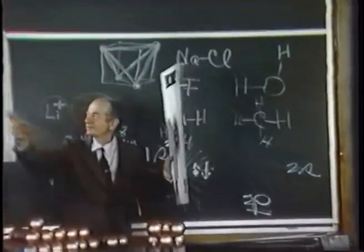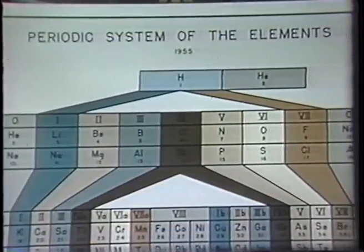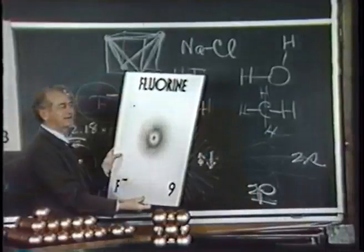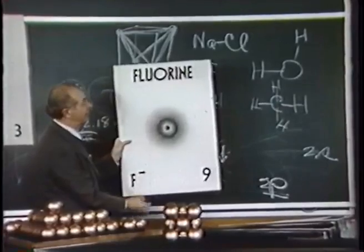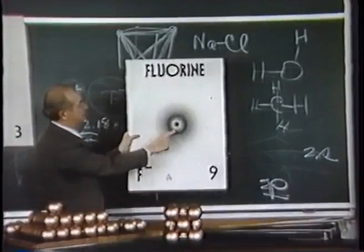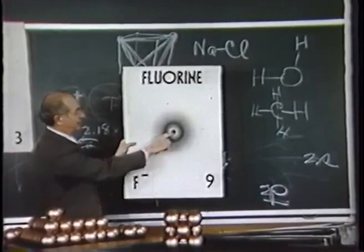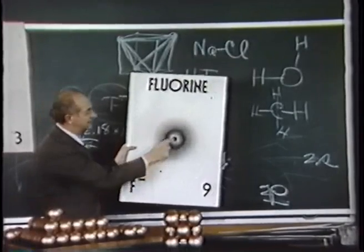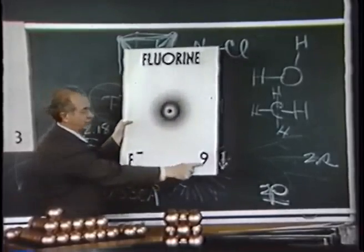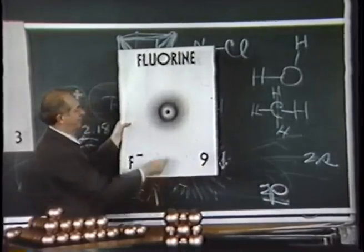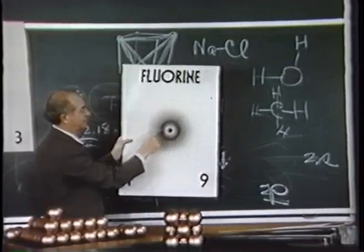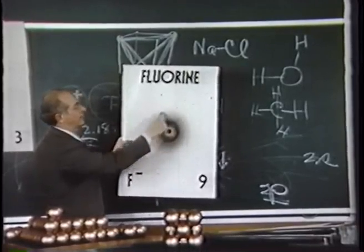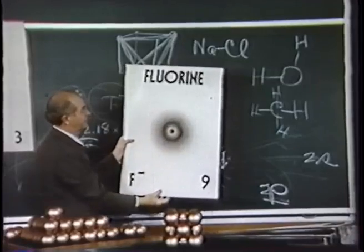As we go on across the periodic table from lithium toward the end of the first short group, we come to the fluorine atom, which, being just short of neon, can pick up one additional electron. The electronic structure of the fluoride ion is shown here: the nucleus, two electrons close in to the nucleus constituting the helium shell — shrunk in because the nuclear charge is much larger than for lithium — and then eight electrons in this fluoride ion: two moving in and out radially, the other six in somewhat elliptical orbits.